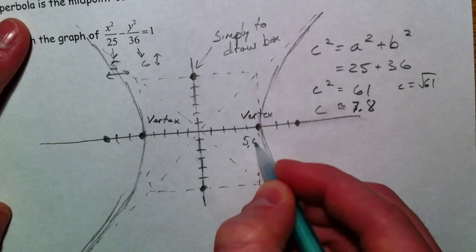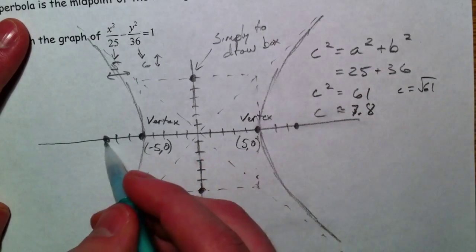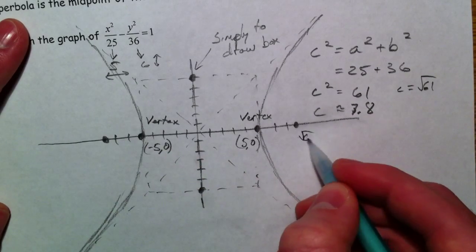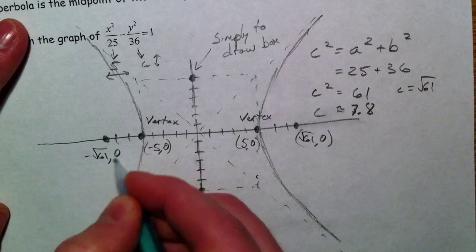We're going to have this vertex is 5, 0. This vertex is negative 5, 0. So this is square root of 61, 0, negative square root of 61, 0.